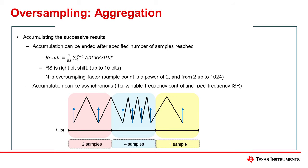The C2000 ADC wrapper architecture is designed to meet the needs of modern industrial and automotive real-time control applications, enabling complex topologies, greater precision, and higher loop frequencies. The post-processing block present in the ADC wrapper accumulates the results of ADC conversions. The accumulated output data can optionally be right-shifted to provide the desired bit depth in relation to the oversampling ratio, or OSR.